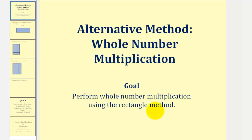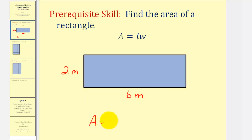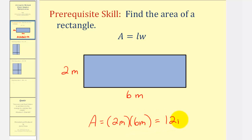Let's begin by reviewing the area formula for a rectangle. The area of a rectangle is equal to length times width. For example, if we have a rectangle with a length of two meters and a width of six meters, then the area of the rectangle is equal to two meters times six meters, which would be 12 square meters.